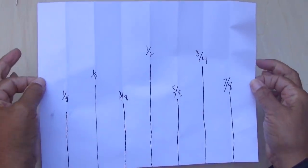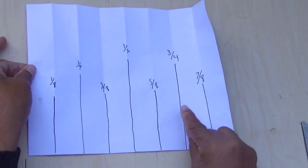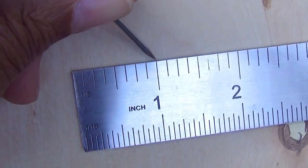So last, eight one eighths. One, two, three, four, five, six, seven, eight represents an inch.